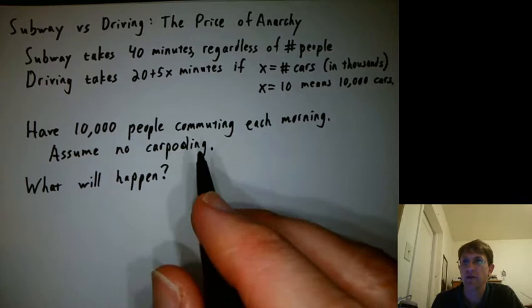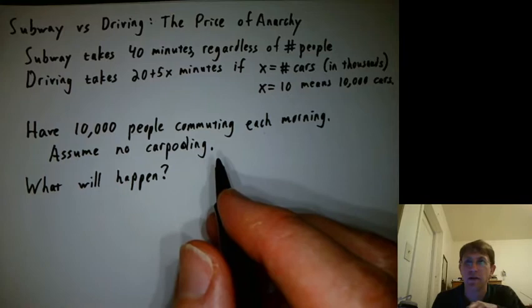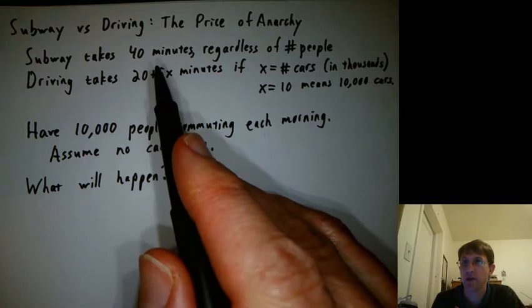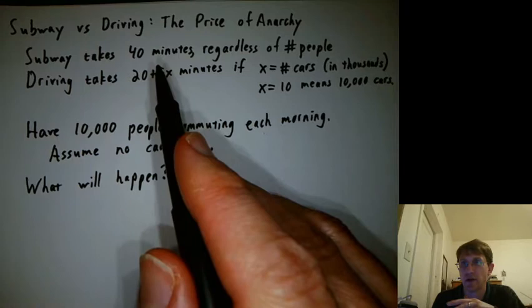Let's say you have 10,000 people who want to commute all in the same direction, maybe from New Jersey into Manhattan or Oakland into San Francisco. The subway takes 40 minutes to get there regardless of the number of people. Whether the trains are empty or full, it always takes 40 minutes.